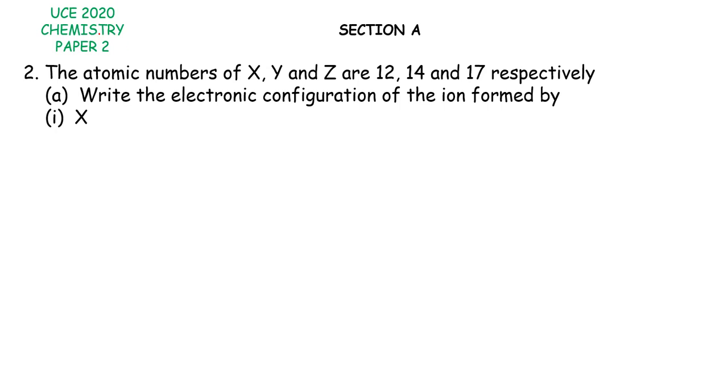Hello and welcome. We are going to look at question 2 of a UCE paper, chemistry paper 2, the year 2020. The atomic numbers of X, Y and Z are 12, 14 and 17 respectively.